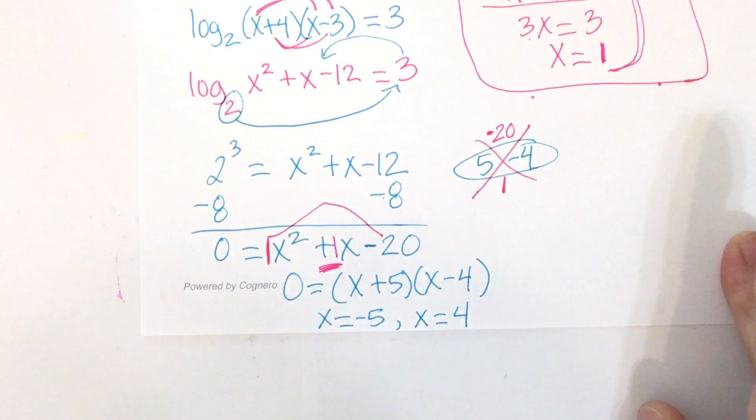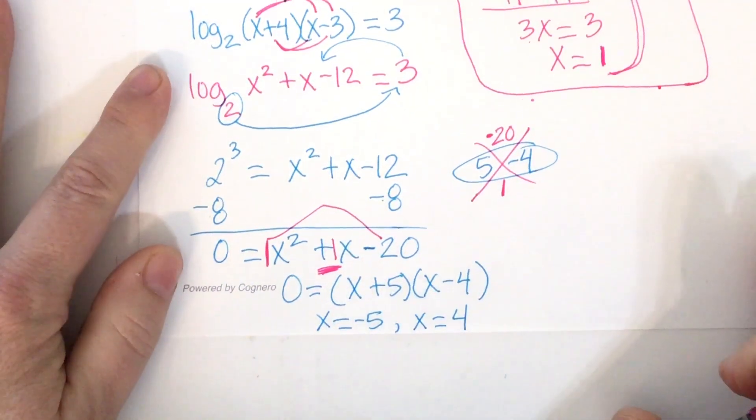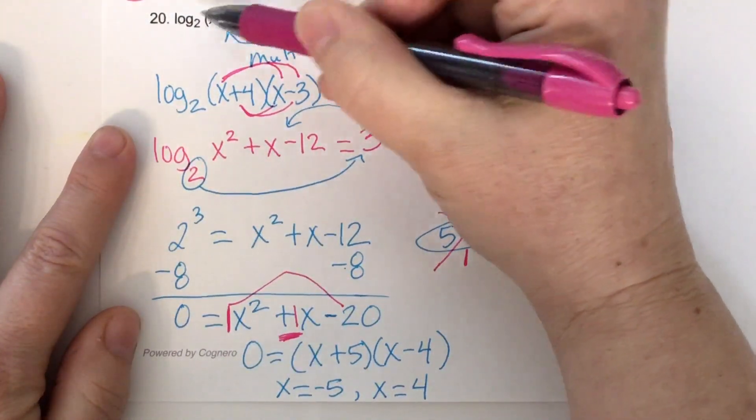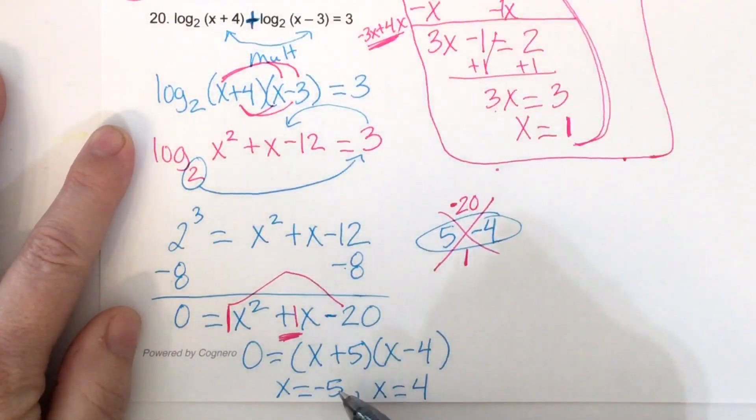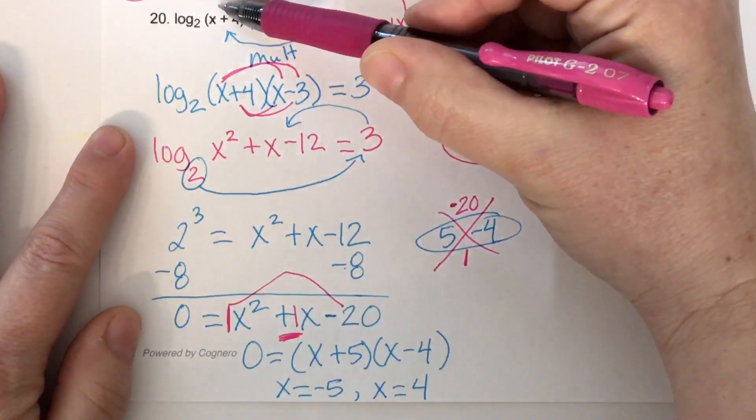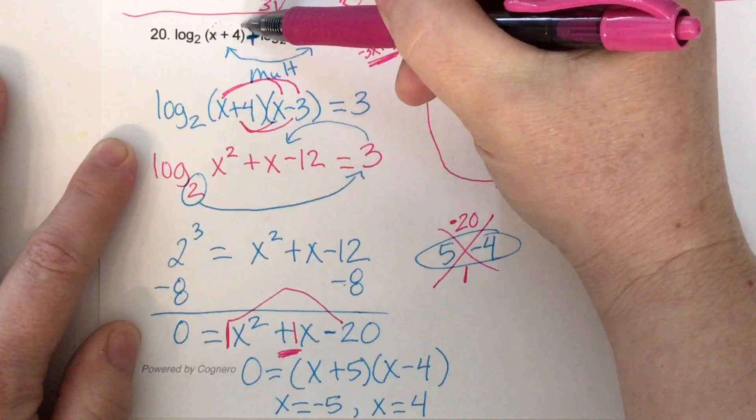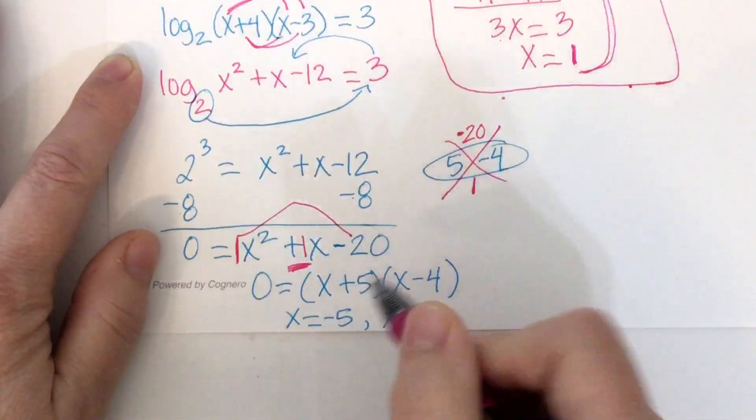Okay. Now we just have to make sure that when we plug them back in, that we don't get a negative or 0 in our expression after the base. Okay. So if I plug negative 5 right here, what's negative 5 plus 4? Negative 1. Uh-uh. That's a negative number. Can't have that.